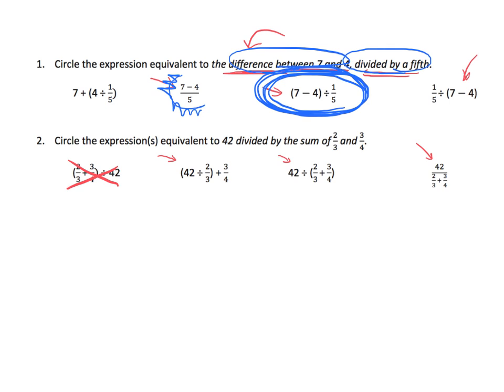Now it says divided by the sum of 2 thirds and 3 fourths. So we're looking for 2 thirds and 3 fourths being added together. That's this one, and this one. This one is the loser, because 2 thirds is not being added to 3 fourths.